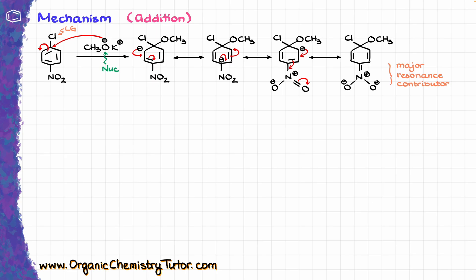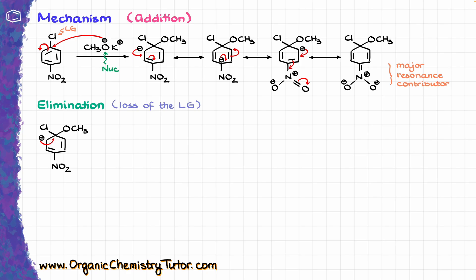Now we move on to the elimination part, in which we lose our leaving group. Since my resonance structures are a bit messy, I'll redraw the molecule. We can show the loss of the leaving group by showing how the electrons kick back and displace the chlorine out of our molecule, giving us the final product, with Cl⁻ just floating away — we no longer care about that.